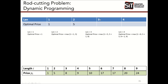For the third option, with length three, I can cut it with lengths one and two, two and one, or not cut it at all — three scenarios total. In the first scenario, I cut it into one and two: I take the value of one from the price table, which is one, and the value of two from the optimal price table, giving me one plus five.